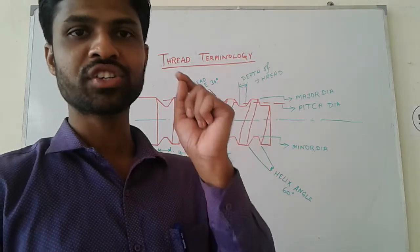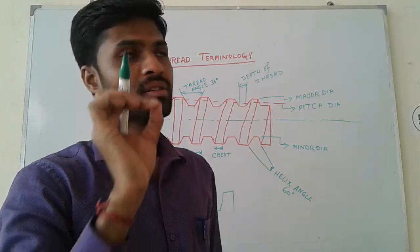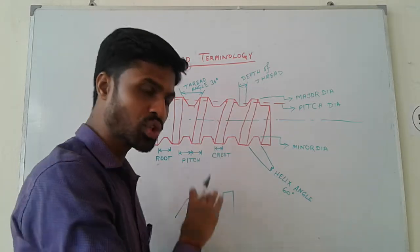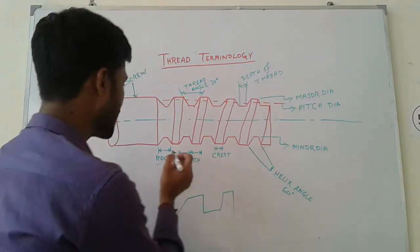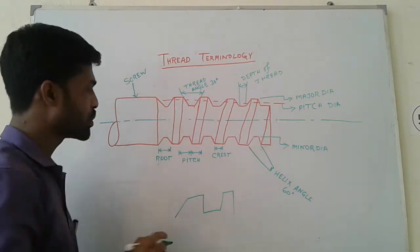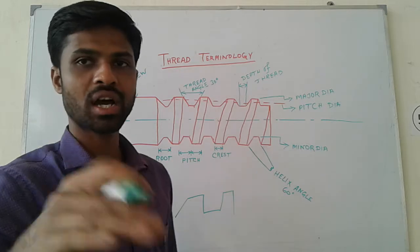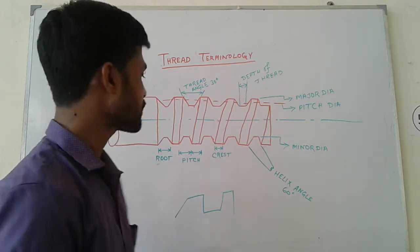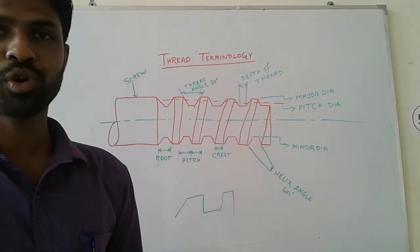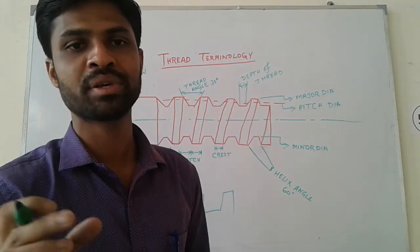The thread profile includes the root and the crest. The crest is the top part and the root is the bottom part of the thread. The pitch is the distance from one corresponding adjacent point to another corresponding adjacent point.